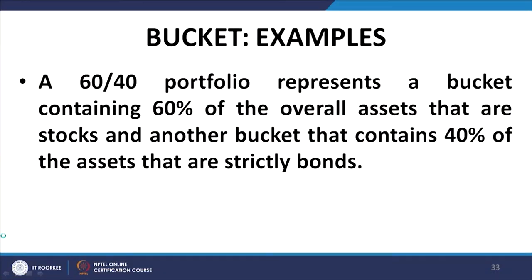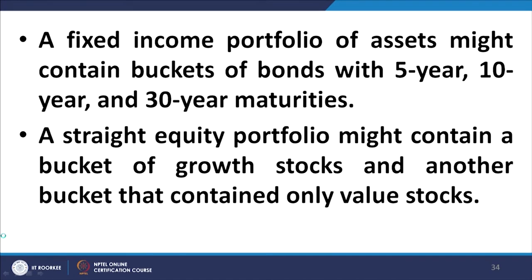A 60-40 portfolio represents a bucket containing 60 percent of overall assets as stocks and another bucket containing 40 percent as bonds. Similarly, a fixed income portfolio may consist of buckets with 5-year, 10-year, and 30-year maturities. A straight equity portfolio may contain a bucket of growth stocks, another of value stocks, and a third of liquid stocks.